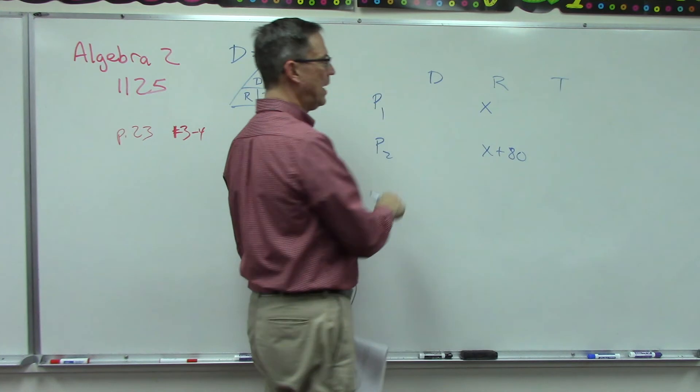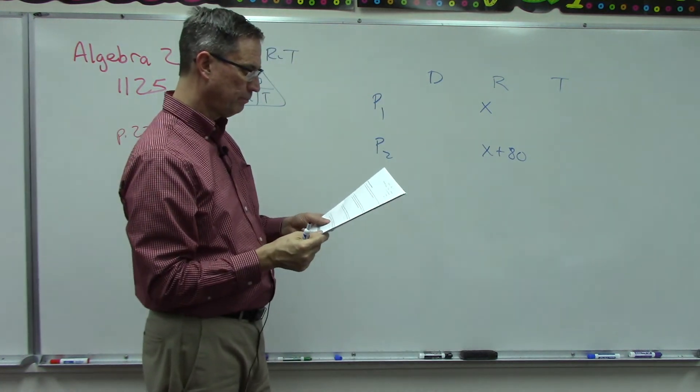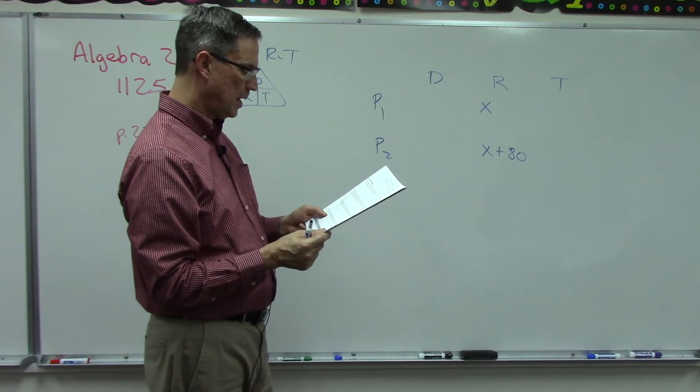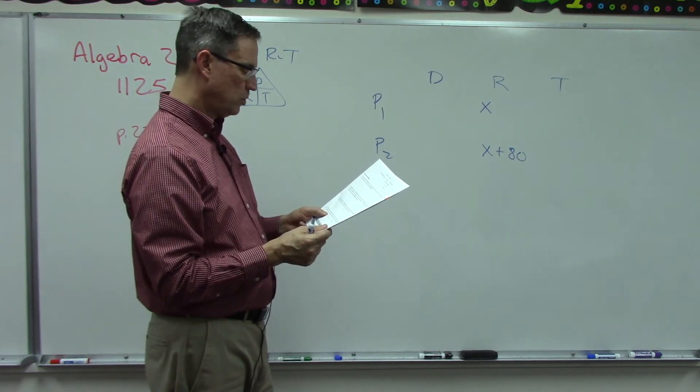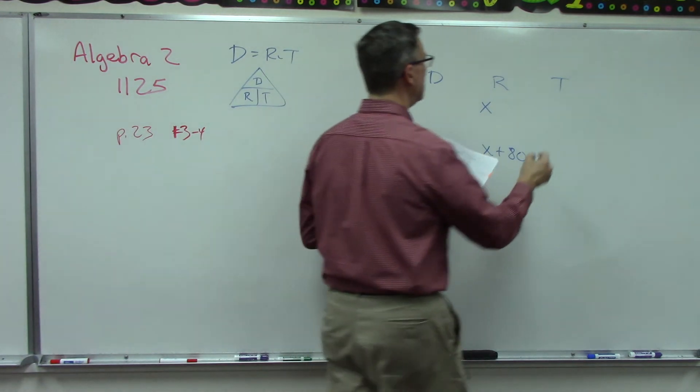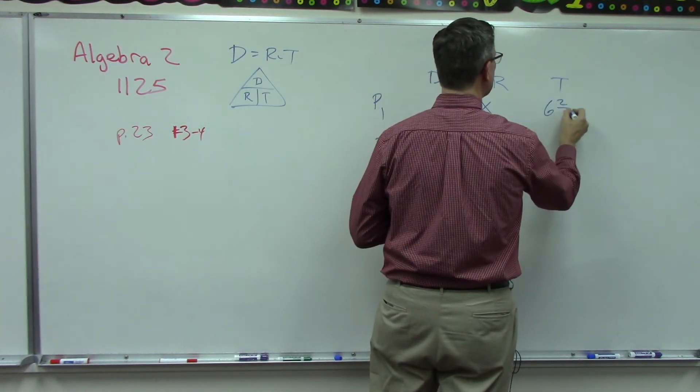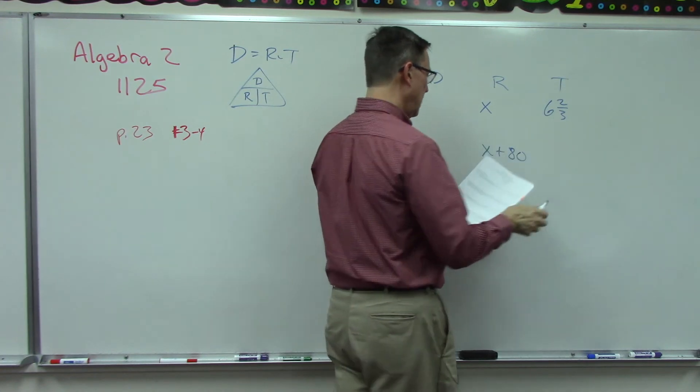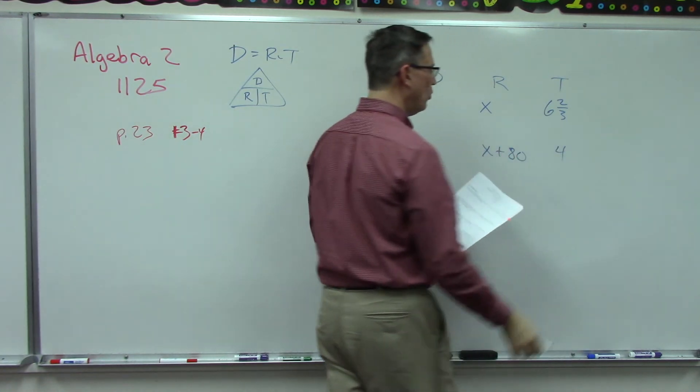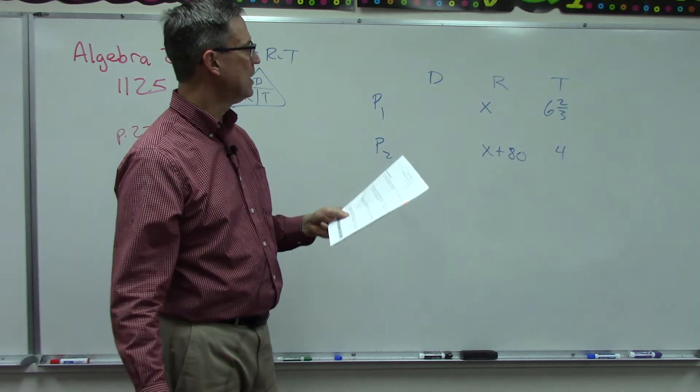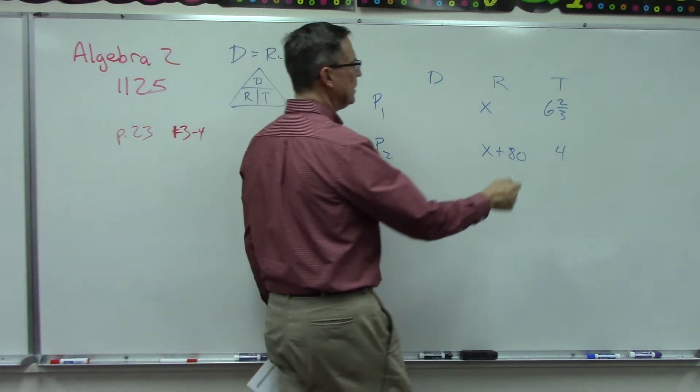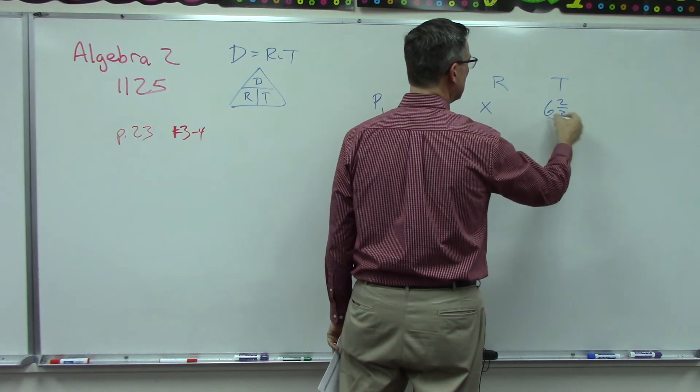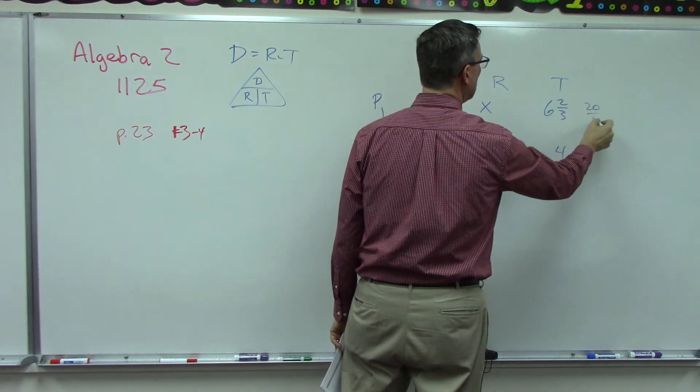We'll leave that one as x because this is the slow one, and we'll add 80 to the slow one, and now we have the speed of the faster second plane. Now it gives us time: the first plane takes six and two-thirds hours, and the second plane takes four hours. It says find the rate of each. Let's first turn this into an improper fraction: 18, 20 over 3.